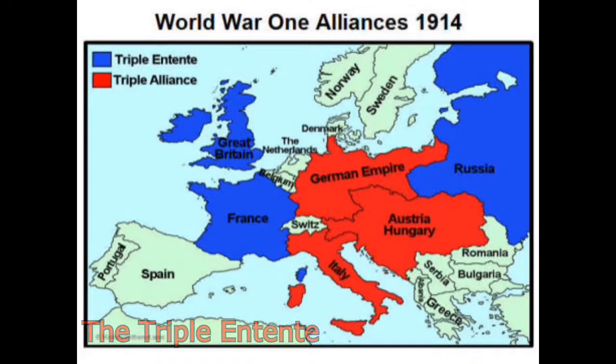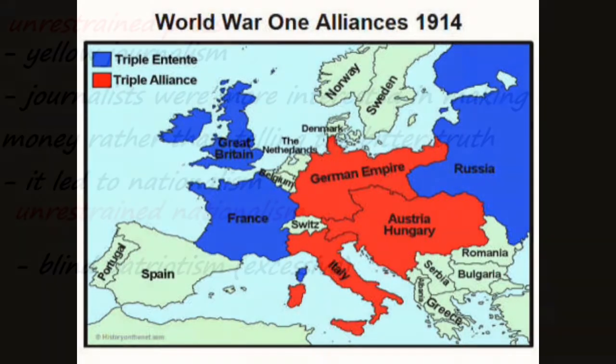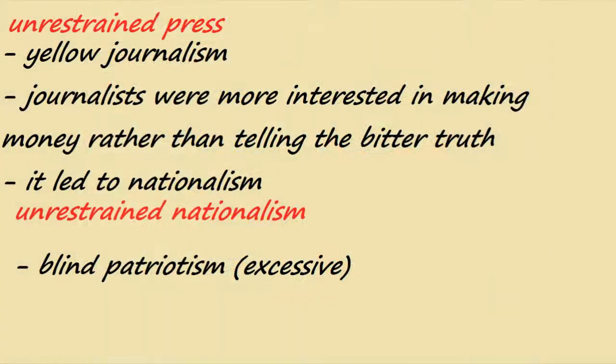Europe was then divided into two blocks: the Central Powers — Germany and Austria-Hungary — and the Allies. Later on, the Allies were joined by the United States of America and Italy as well, after Italy left the Triple Alliance.